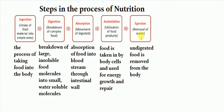The next step is egestion. All the food we eat is not digested by our body. Some part of the food remains undigested and is not useful for the body, so it needs to be removed. The process of removal of undigested food from the body in the form of waste is called egestion. These are the five basic steps involved in the process of nutrition.